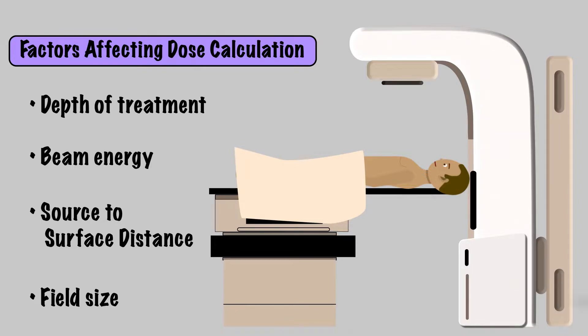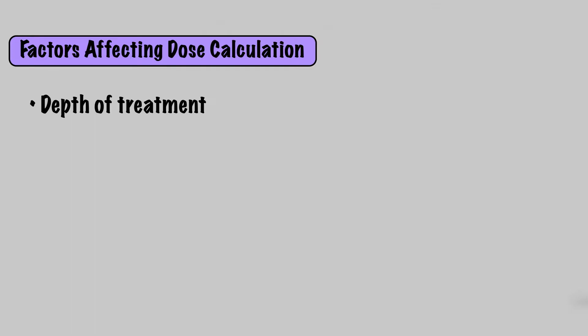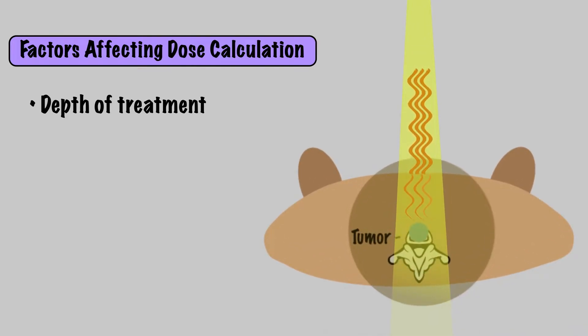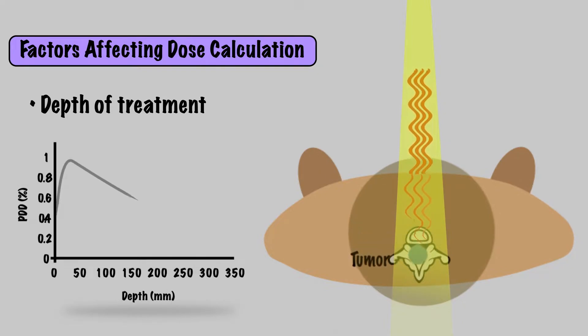Let's start with the patient and the depth of the target. The separation or thickness of the patient is going to affect how many monitor units are required. As the photons pass through the patient, they will be attenuated by the tissue. The wider the separation or the greater depth you are treating to, the more monitor units will be required.